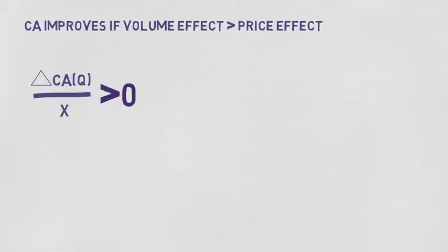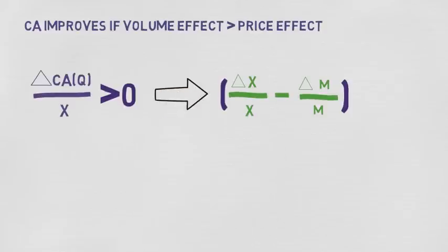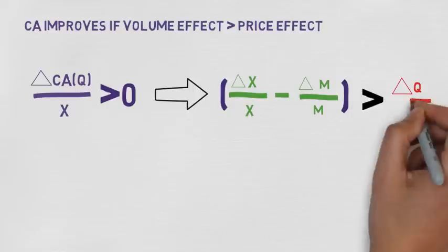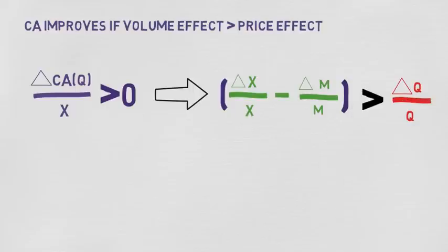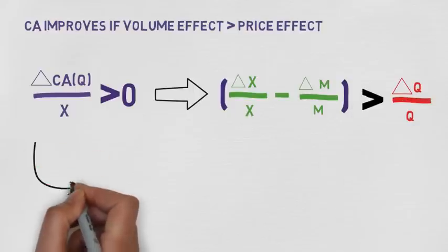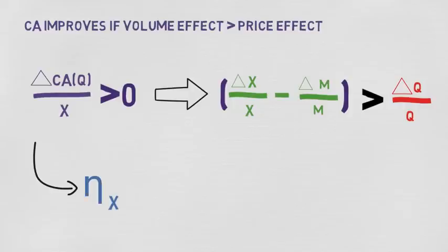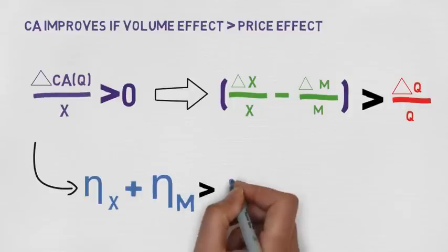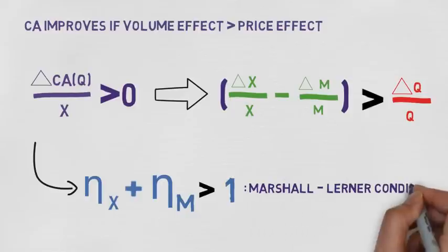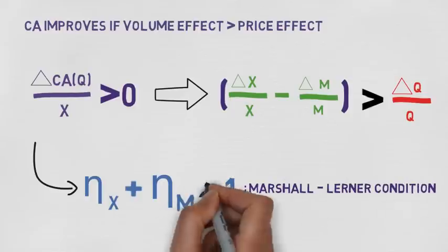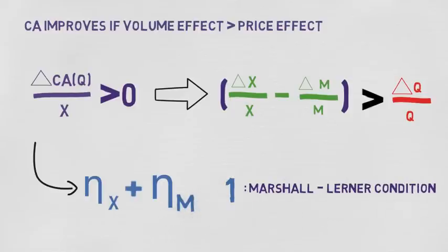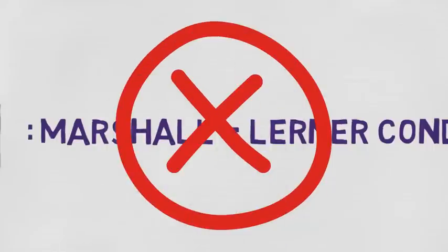If the volume effect is greater than the price effect, then the current account will improve. Equivalently, if we divide both sides by delta Q over Q, we get that the sum of the elasticities of exports and imports — given by eta X and eta M — is greater than 1. This is known as the Marshall-Lerner condition. However, if the sum of the two elasticities is less than 1, then a real depreciation will lead to a deterioration in the current account.